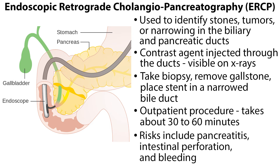Another test involving the oral insertion of an endoscope is the Endoscopic Retrograde Cholangiopancreatography, or ERCP. This test is used to identify stones, tumors, or narrowing in the biliary and pancreatic ducts. Once the endoscope is properly placed, contrast agent can be injected through the ducts, which is visible on x-rays. If needed, a biopsy can be taken, a gallstone can be removed, or a stent can be placed in a narrowed bile duct. An ERCP is an outpatient procedure that usually takes about 30 to 60 minutes, then the patient goes to recovery for 1 to 2 hours.